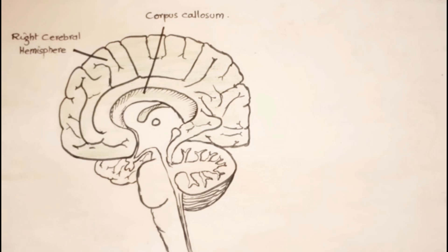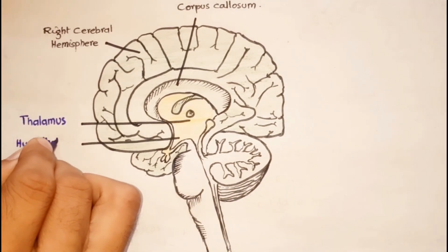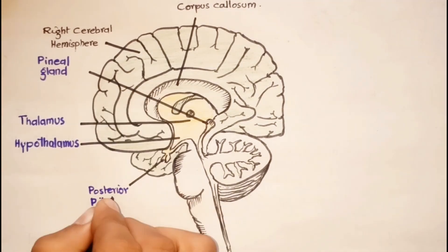The diencephalon consists of the thalamus, hypothalamus, pineal gland, and the posterior pituitary gland, majorly.